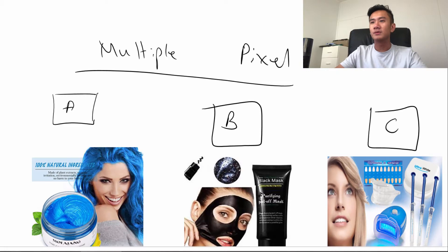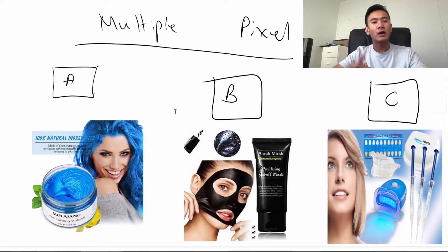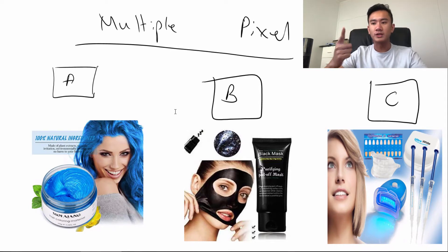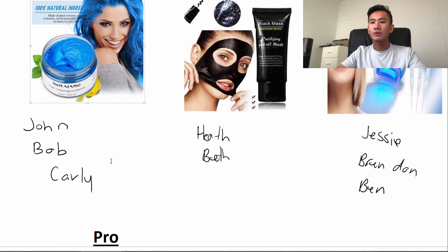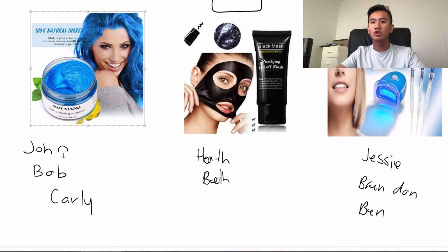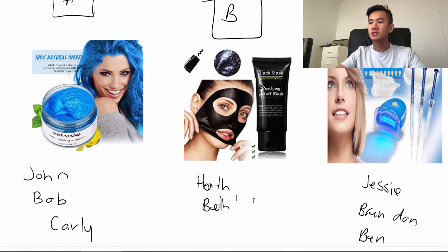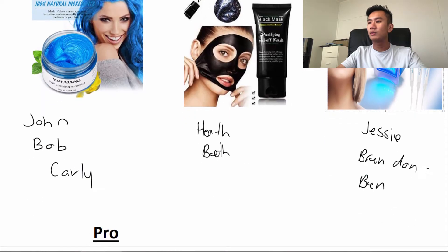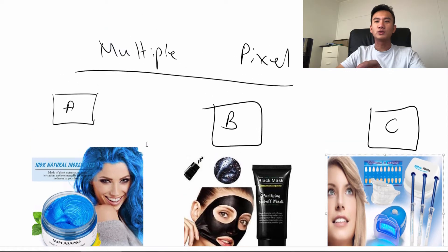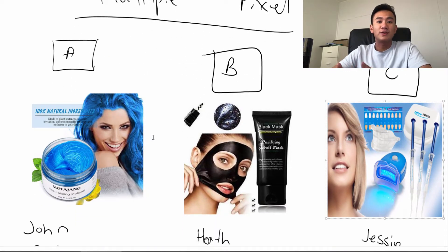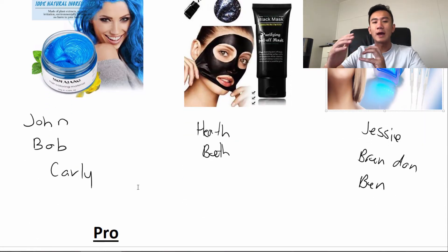So we're going to go through two examples. Multiple pixels: you have ad account A, B, and C, each one having their own winning product and their own pixel. So we have a hair wax, face mask, and teeth whitening kit. For A, we have these three purchases — John, Bob, Carly. Face mask, we have two purchases. Teeth whitening, we have three. Obviously the numbers aren't going to be this small — you're going to have one pixel per winning product, so it must have at least 50 purchase data. This is a smaller scale example.